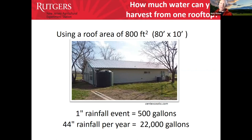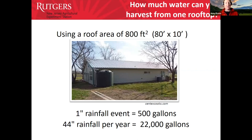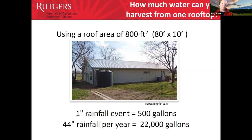With New Jersey's roughly 44-inch annual rainfall, you could capture approximately 22,000 gallons of water just from cisterns on your outbuildings. This is especially valuable because we are seeing more droughts — if you can capture water in the spring before the summer drought, you have water ready for irrigation and watering livestock later in the season.